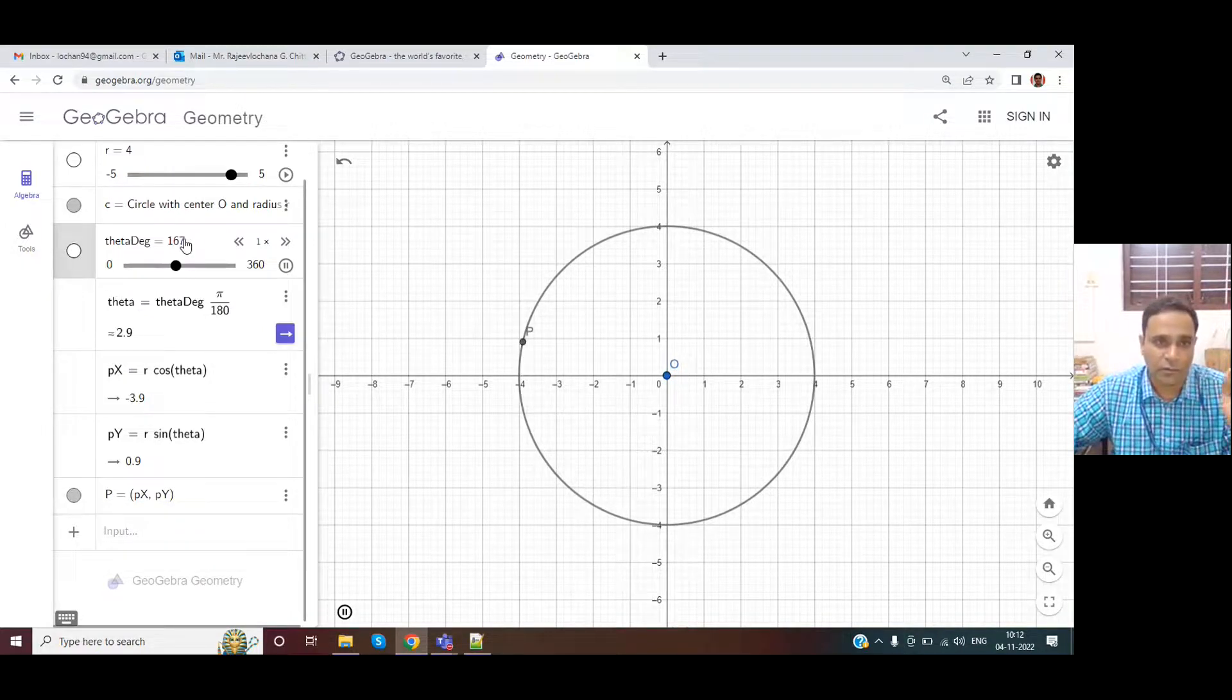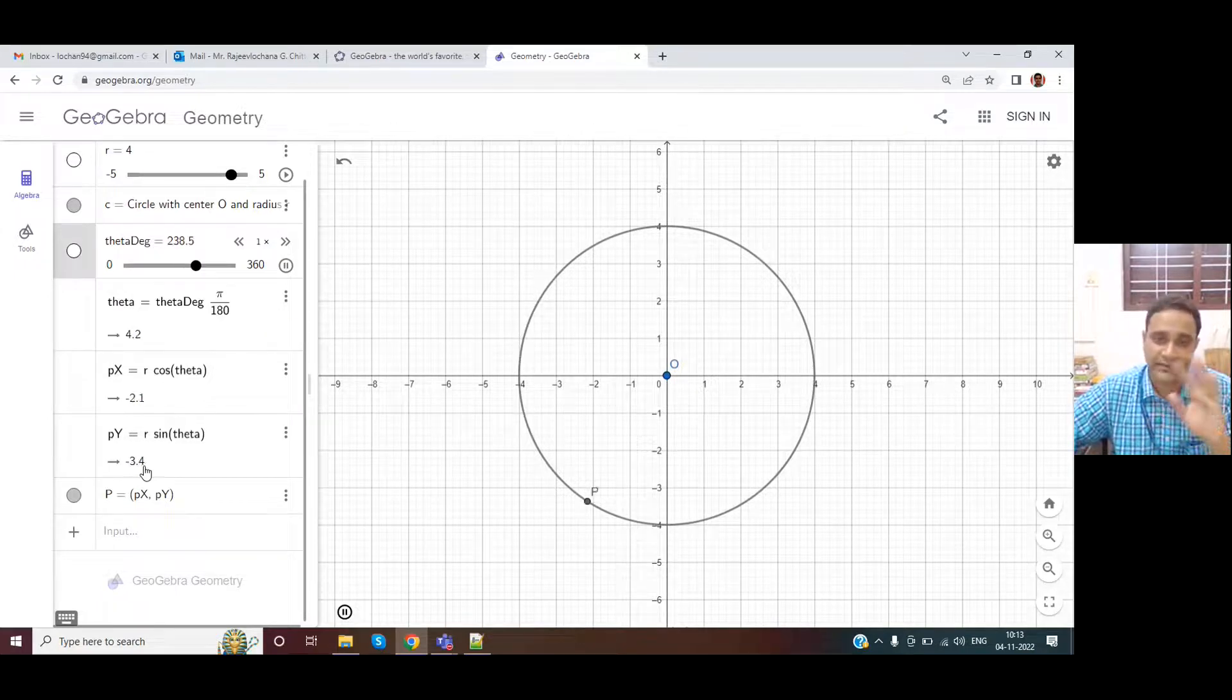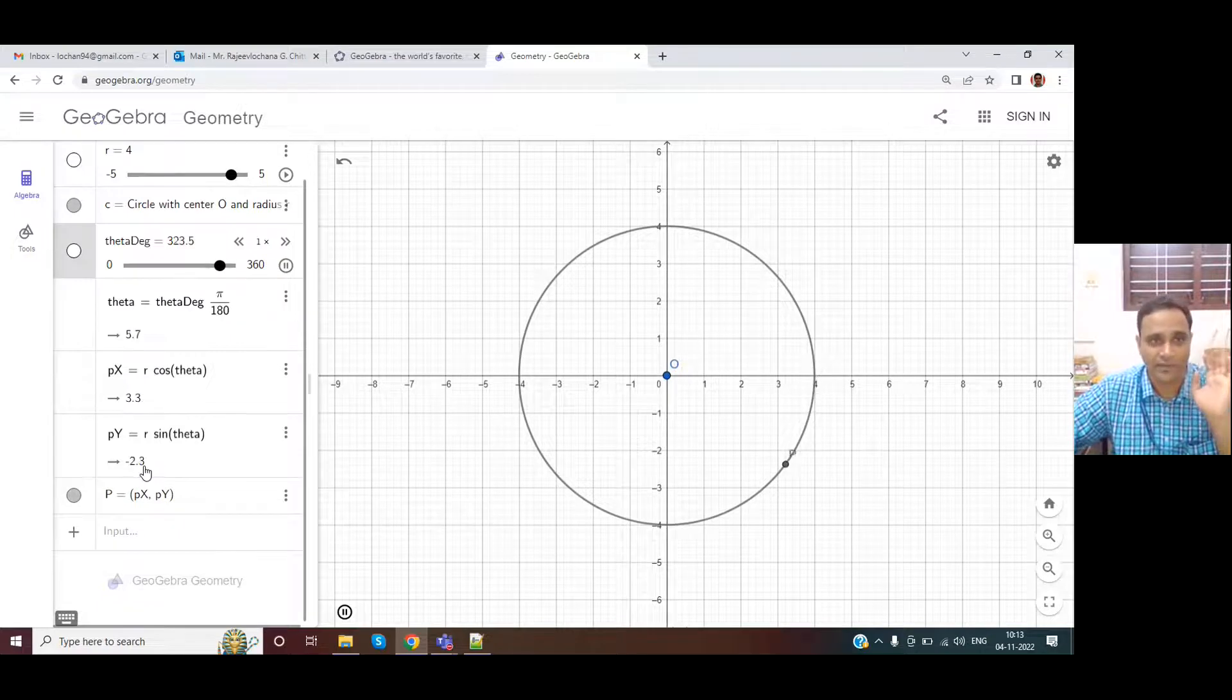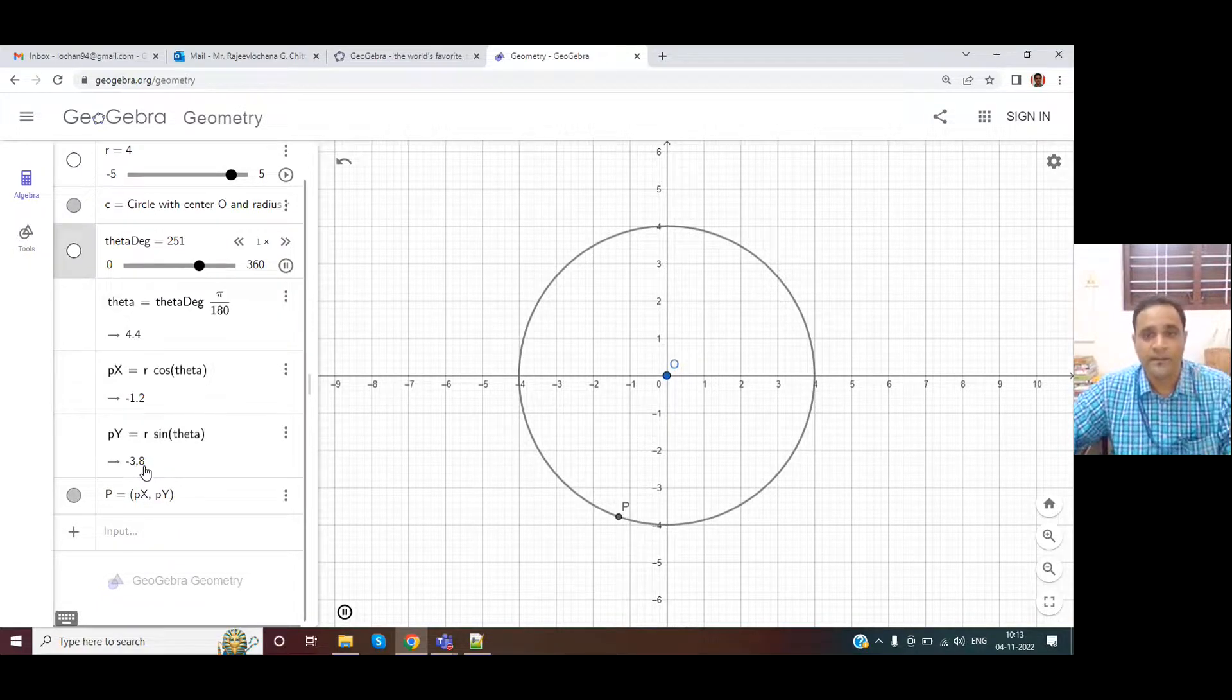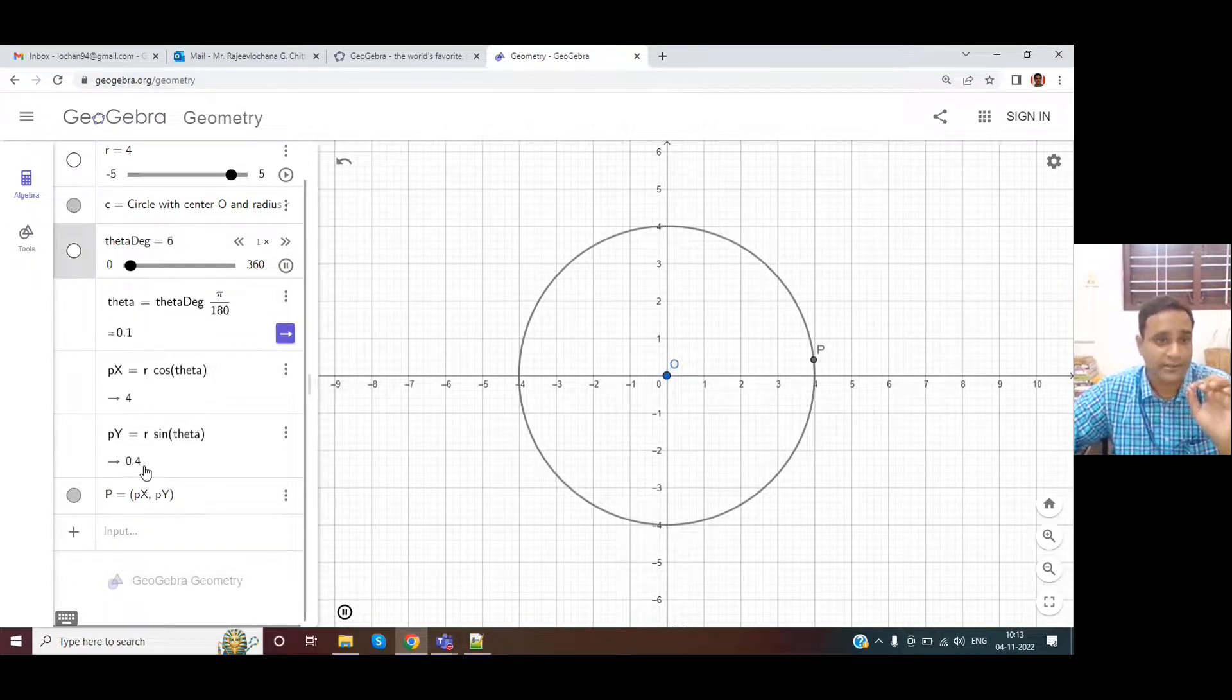So the coordinates Px and Py, if you observe carefully, it becomes positive and negative based on the value of angle. First quadrant, second, third, fourth. That ASTC rule is applicable for such application.